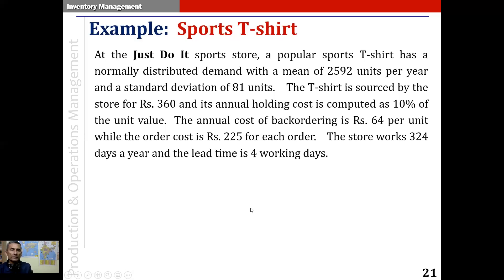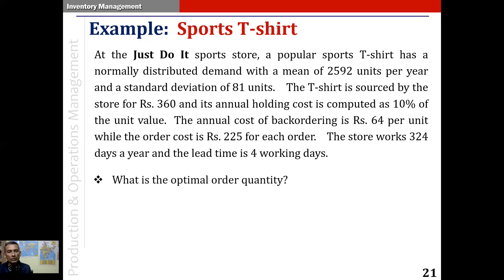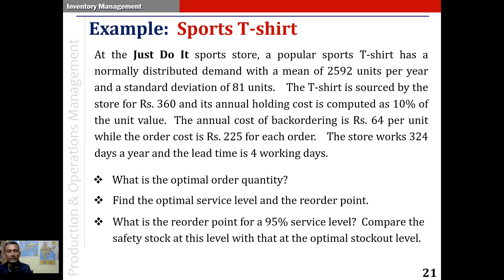Let's do an example. At the Just Do It sports store, a popular sports t-shirt has normally distributed demand with a mean of 2,592 units per year and a standard deviation of 81 units. The t-shirt costs rupees 360 with annual holding cost at 10% of unit value, annual backorder cost of rupees 64 per unit, and order cost of rupees 225 per order. The store works 324 days a year with a lead time of 4 working days. We need to find the optimal order quantity, the optimal service level and reorder point, and the reorder point at a 95% service level, then compare safety stocks.